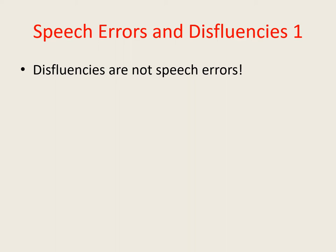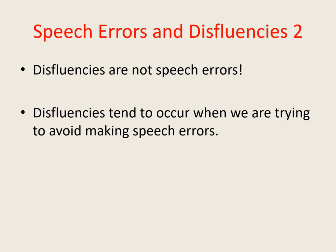Throughout the course of this slideshow, try to bear in mind that speech errors are speech errors and disfluencies are disfluencies. Having said that, it's certainly true that speech errors and disfluencies tend to be closely associated with each other, and in particular people often become disfluent at moments when they're trying to avoid making speech errors. Similarly, stammering involves certain types of disfluencies and people may stammer when they're trying to avoid making speech errors.